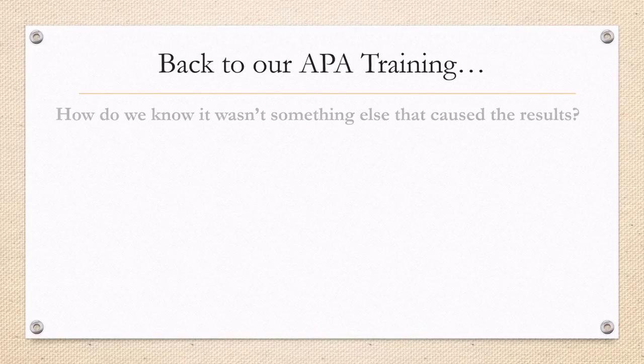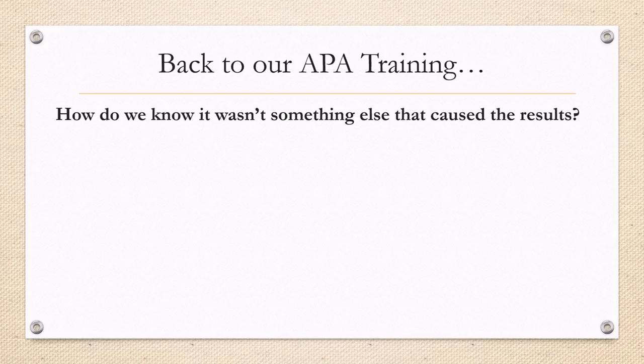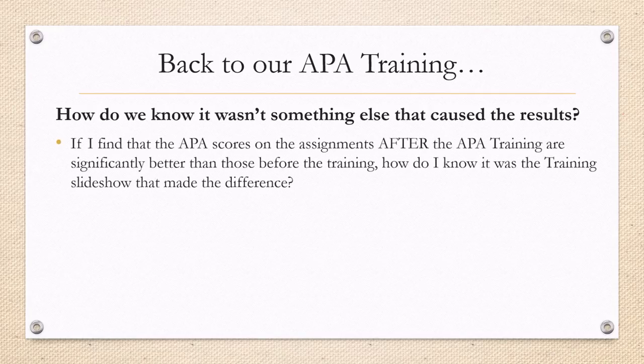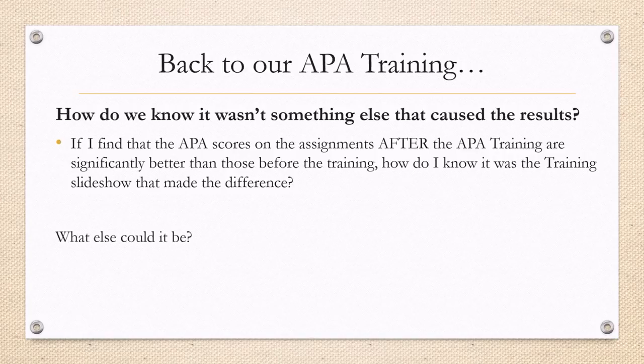So, back to our APA training. How do we know it wasn't something else that caused results? Say I find that the APA scores on the assignments after the APA training are significantly better than those before the training. How do I know it was the training slideshow that made the difference? What else could it be?